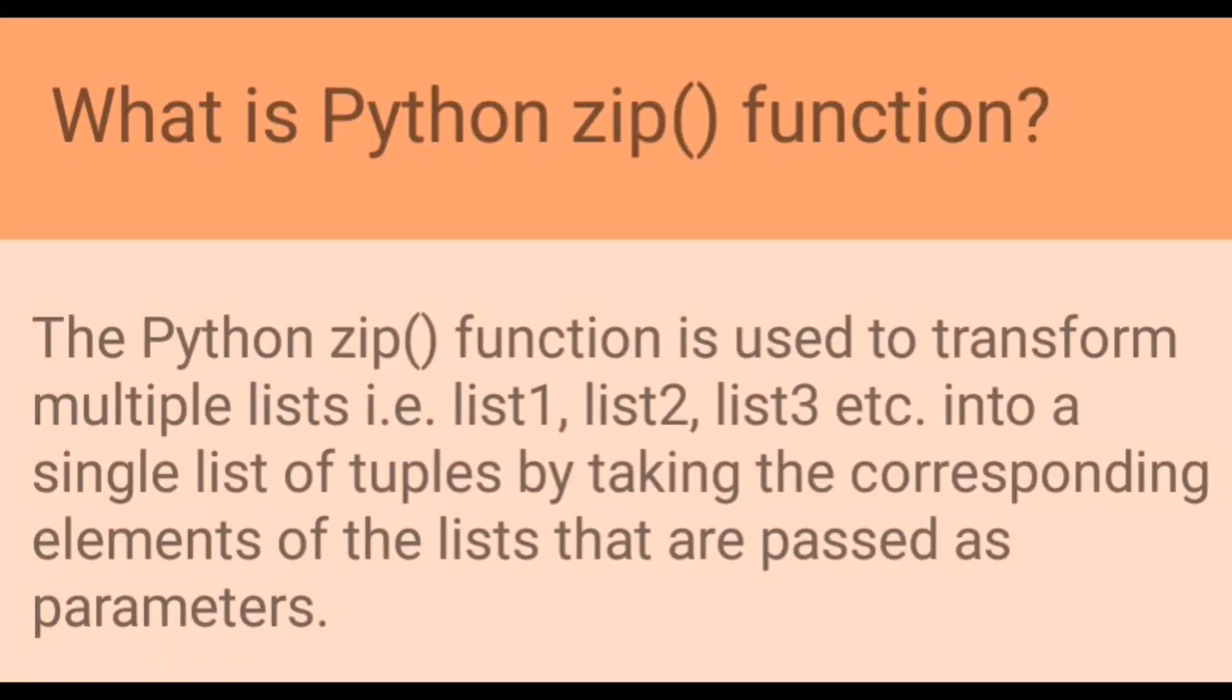What is Python zip function? The Python zip function is used to transform multiple lists (list1, list2, list3, etc.) into a single list of tuples by taking the corresponding elements of the lists that are passed as parameters.